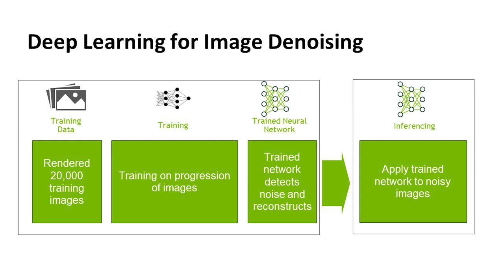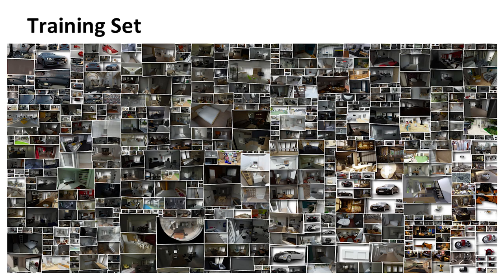Deep learning can be used for image denoising. The way this works is that we have a bunch of rendered images — 20,000, 40,000, however many we can get — as training data, and then we train our neural net using those images so the neural net knows what the environment's like. We can then use that neural net to take a noisy image and have it infer what the real image should look like. And from that training set, we can actually do a great job of denoising images.